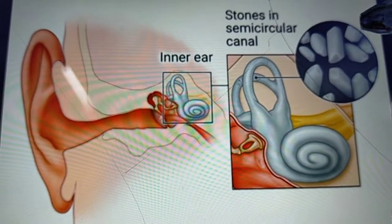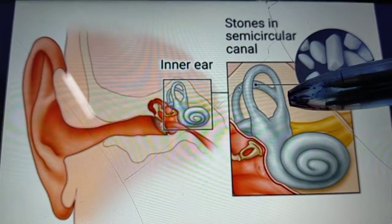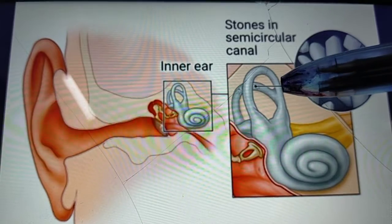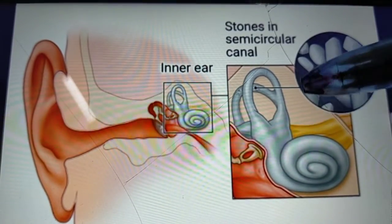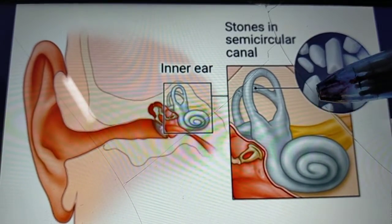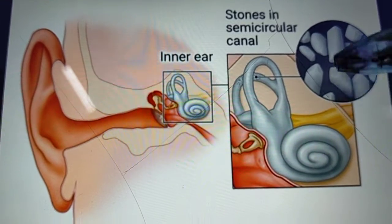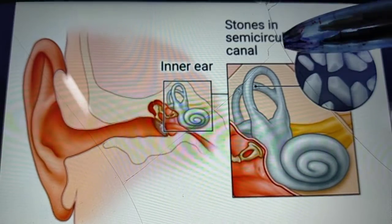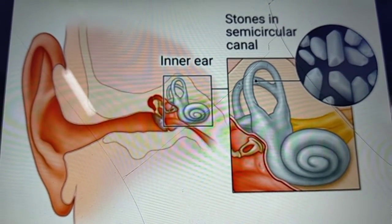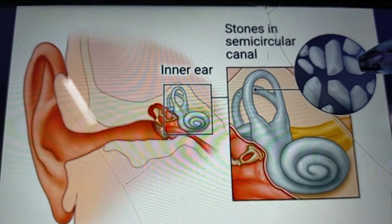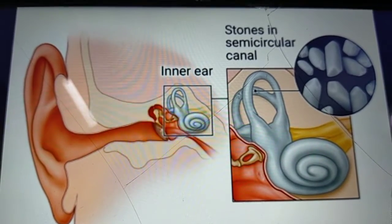Because of some reason, these tiny calcium carbonate crystals — known as canaliths or otoconia — get displaced from the utricle into the semicircular canal. With slight movement of the head, these crystals also move and give false or confusing messages to the brain regarding the movement of the head and the body's position, resulting in episodes of vertigo, spinning sensation, and dizziness. The Epley maneuver is used to bring back these displaced calcium carbonate crystals from the semicircular canal into the utricle — that is why it is also known as the Canalith Repositioning Procedure.